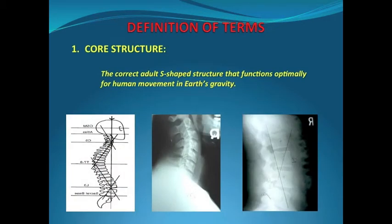Let's cover some of the definitions of terms on words that are commonly used with core training. These words are often used interchangeably; however, they are quite different in terms of training. The first term is core structure: the correct S-shaped spinal structure that the human body most optimally functions from in Earth's gravity.